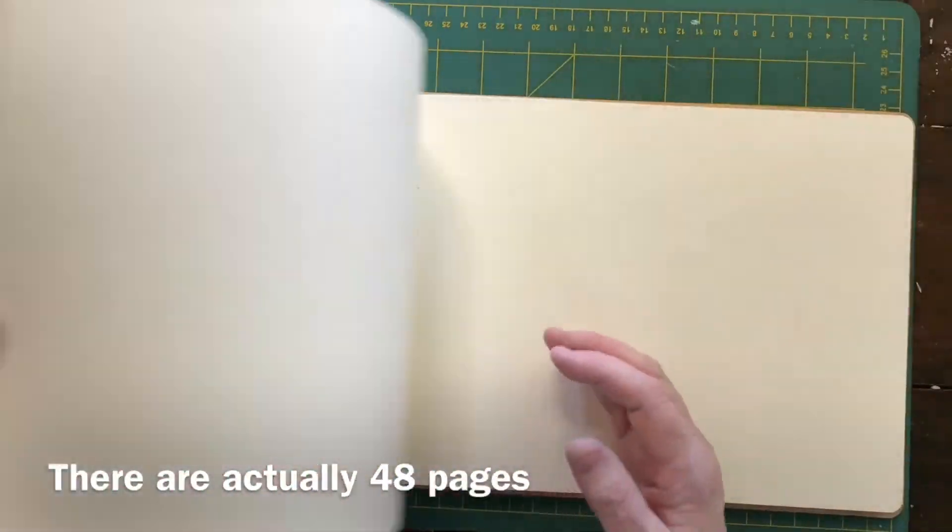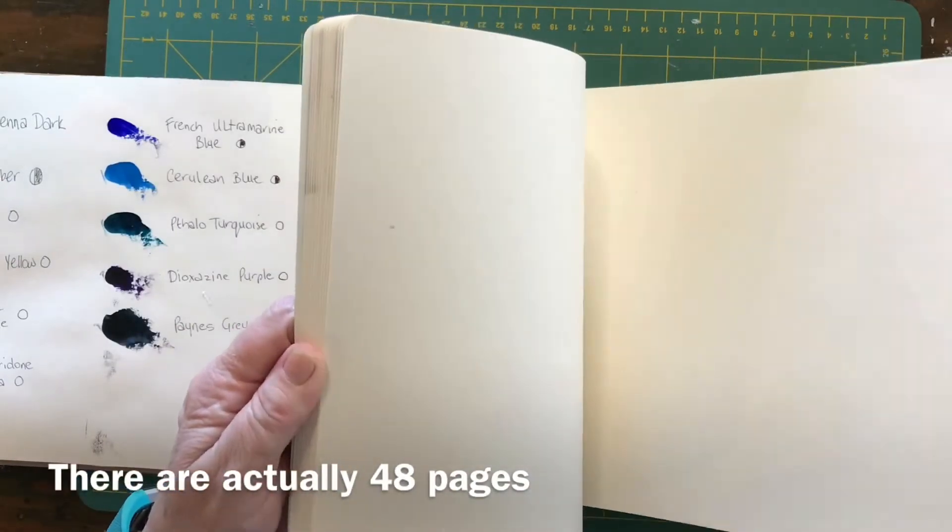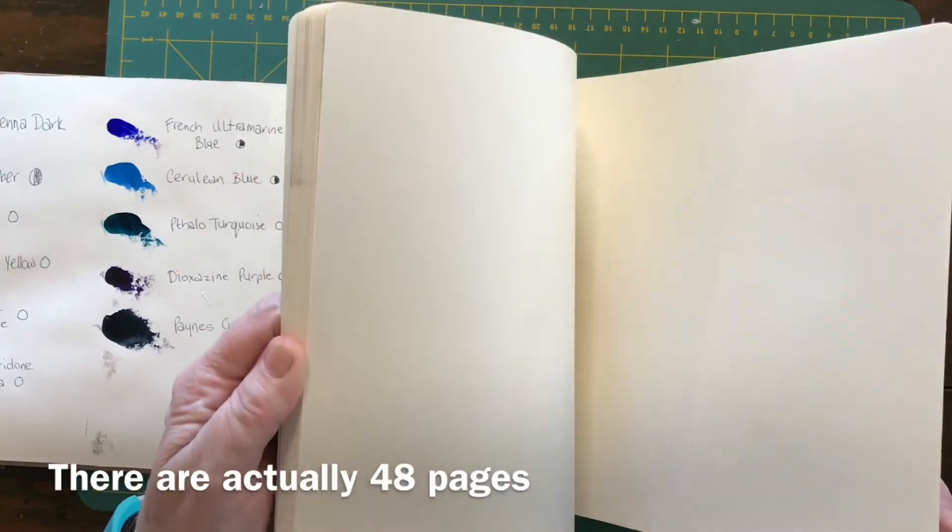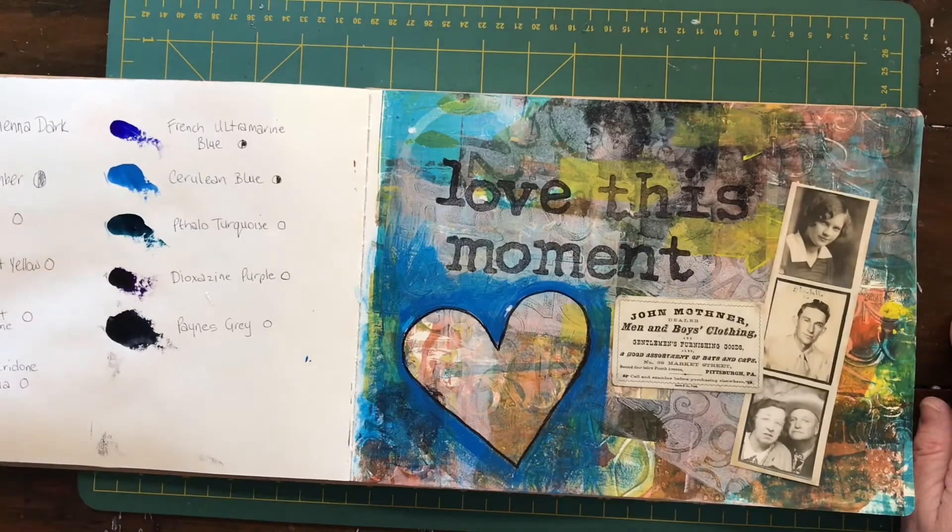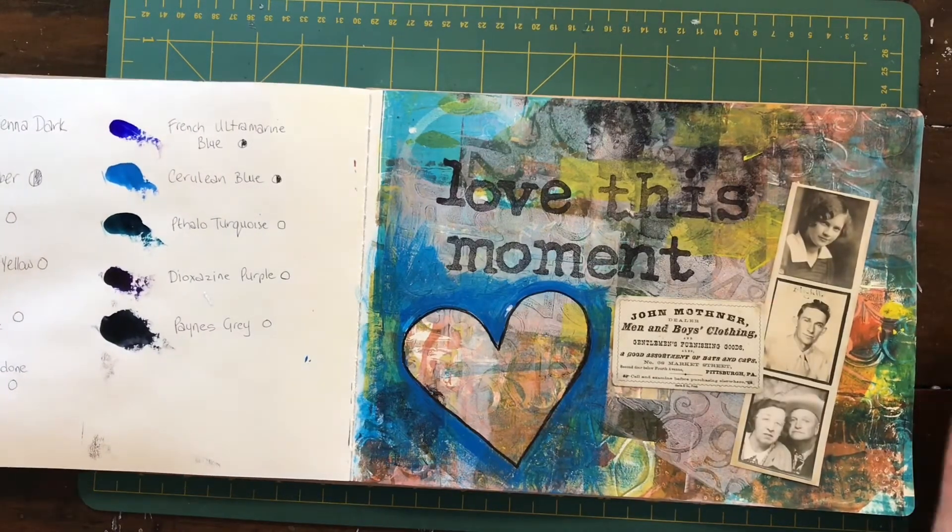The book itself has 40 of these pages so back and front that means you've got 80 to work on and I just think it's lovely. I'm very very happy with it. It takes the paint really well.